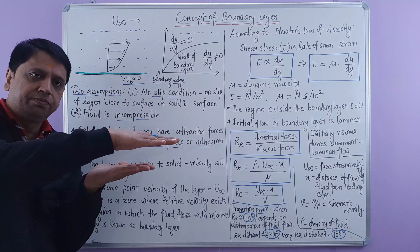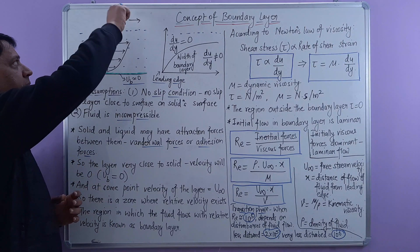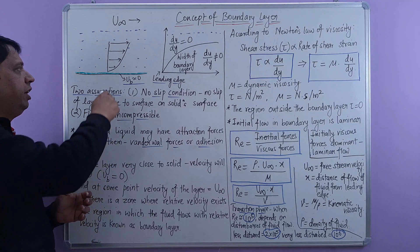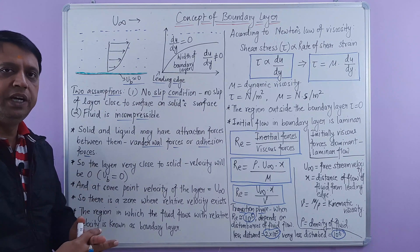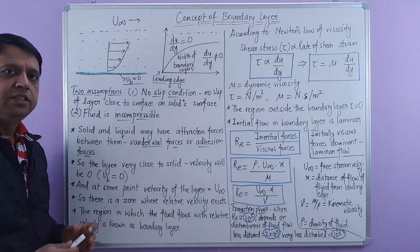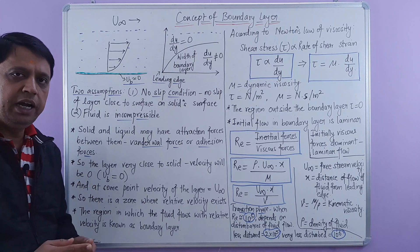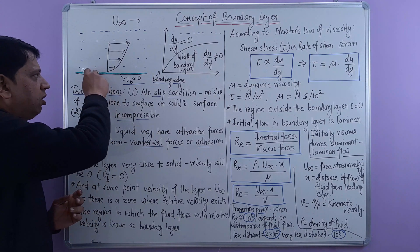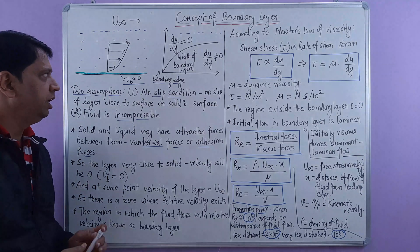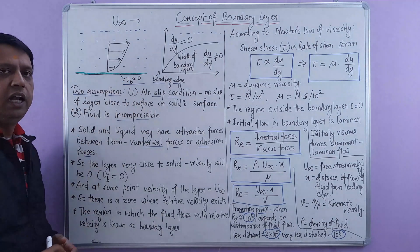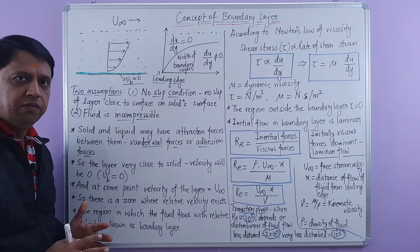The layer which is almost near to the free surface of the fluid will have a maximum velocity, represented by u-infinity. The layer which is very close to the stationary surface is moving at almost negligible speed. This is because of the forces of attraction — such as van der Waals forces or adhesion forces — that exist between the liquid and solid molecules. That's why the layer of fluid very close to the solid surface moves at zero velocity, and the speed increases gradually as we move away from the stationary surface, as shown by this green line.